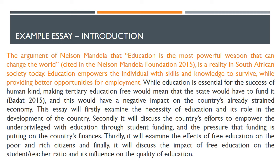The student goes on to say: 'Education empowers the individual with skills and knowledge to survive while providing better opportunities for employment,' already building the start of an argument for why people should have access to education. This is followed by her position statement, indicated in blue: 'While education is essential for the success of humankind, making tertiary education free would mean the state would have to fund it, and this would have a negative impact on the country's already strained economy.'